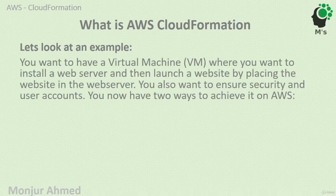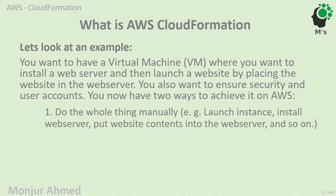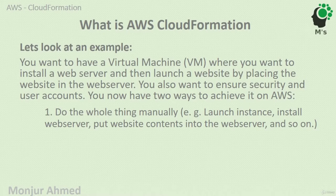Here's an example: you want a virtual machine with a web server installed, hosting a website accessible to people worldwide. You also want to ensure security and user accounts. The first way to do this is manually - launch an EC2 instance, install the web server, put the website contents into the correct folder, then configure the security group, security policy, and create users.